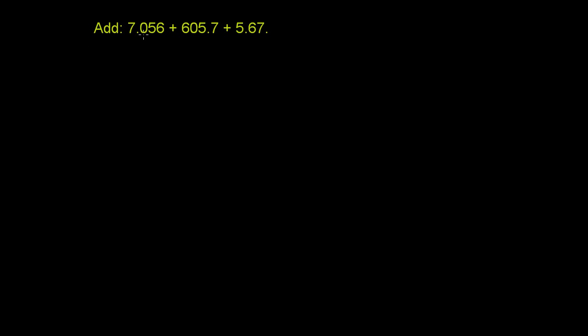We need to add 7.056 to 605.7 to 5.67. Now when you're adding any number, you always want to make sure you line up numbers in the same place. And especially when you're dealing with decimals, the easiest way to do that is to just line up the decimals. So let's do that.